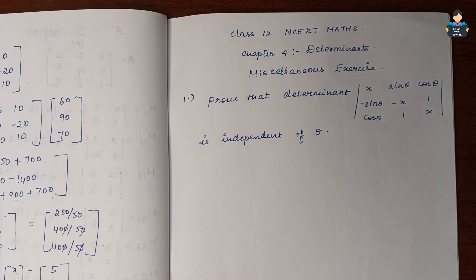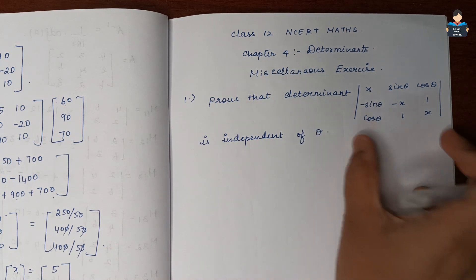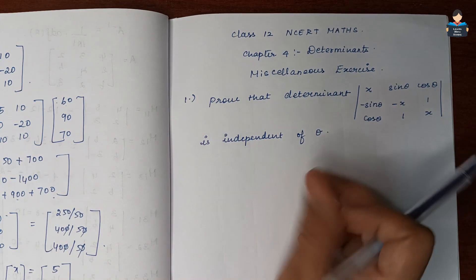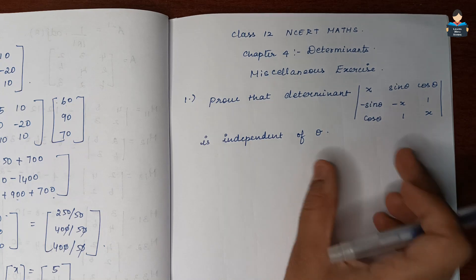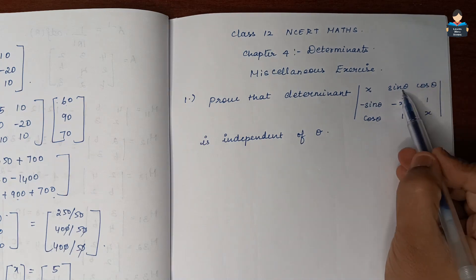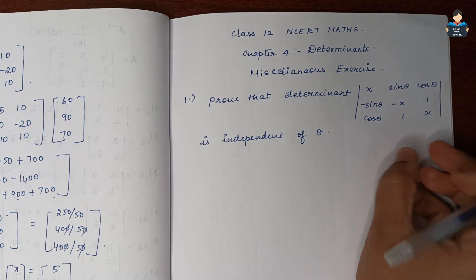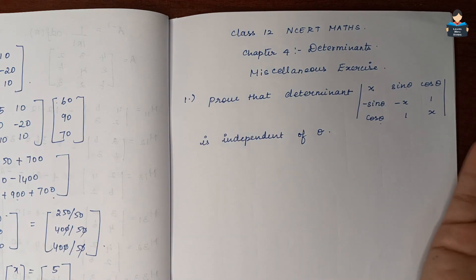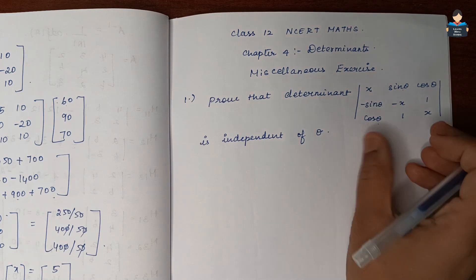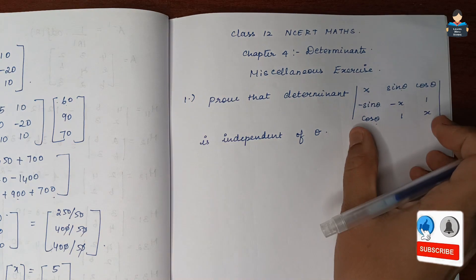Hello everyone, welcome to our channel. In this video we look at Class 12 NCERT Maths Chapter 4 Determinants, Miscellaneous Exercise, first question. We need to prove that the determinant is independent of theta. So we will find out the determinant and show it is independent of theta — meaning for any value of theta, such as 30, 60, or 90, the determinant value does not change.